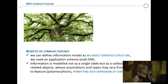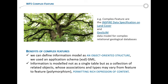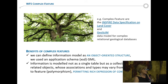What are the benefits of a complex feature? The first is that we can define an information model as an object-oriented structure. For this reason we use an application schema that we can define ourselves or reuse an existing one. The information is modeled not just as a single table but as a collection of related objects, permitting rich expression of content. For example, the INSPIRE Directive uses this type of service in its data specification on land cover.